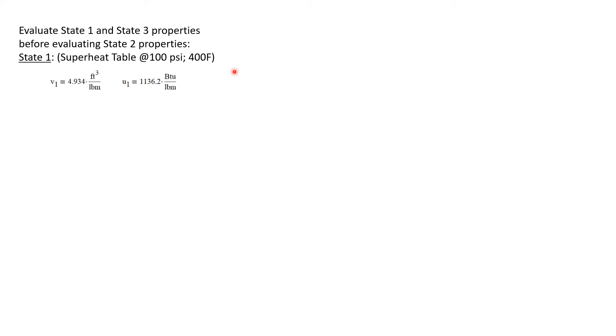Let's evaluate properties for state one and state three before evaluating state two. State one is superheated at 100 psi and 400 degrees Fahrenheit. Going to the superheat table, the specific volume at state one is 4.934 cubic feet per pound mass, and the internal energy at state one is 1136.2 BTUs per pound mass.